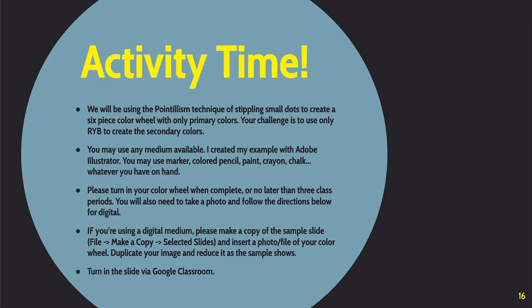All right, so we're going to be making a color wheel using the pointillism technique with stippling small dots. You can only use red, yellow, and blue — the primary colors — and you must create your secondary colors. You can use any medium you have available. I did mine with Adobe Illustrator. Turn in your color wheel when complete, or no later than three class periods. Take a photo and load it into the sample slide so we can see how everyone approached it and how successful our various mediums were. Everyone will turn in their slides via Google Classroom.